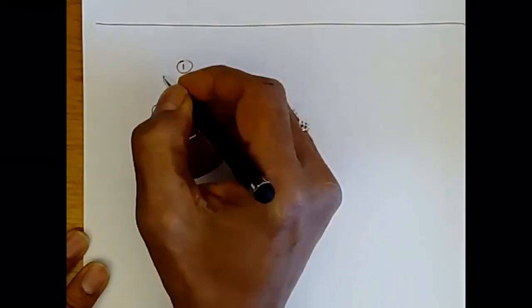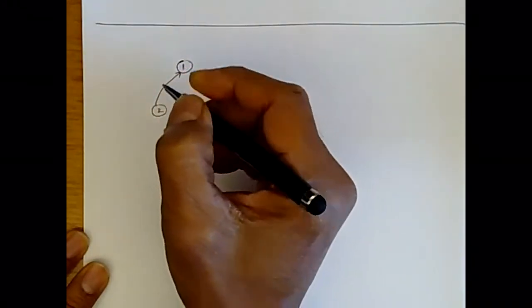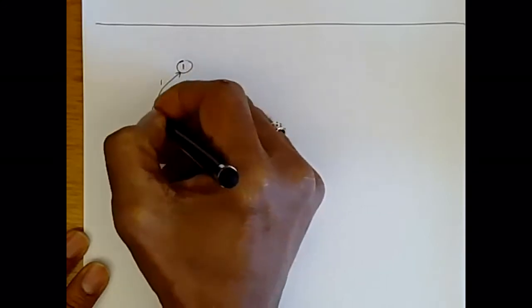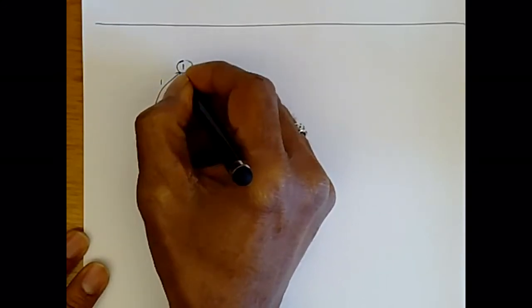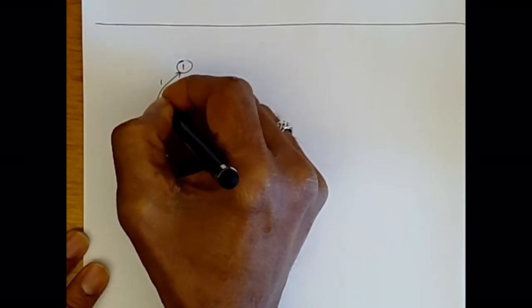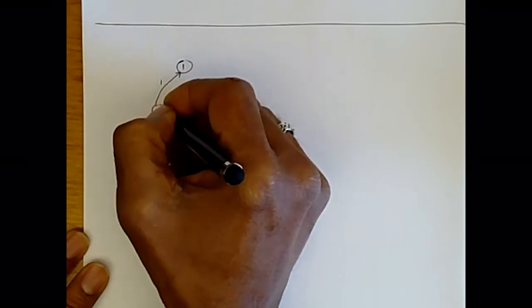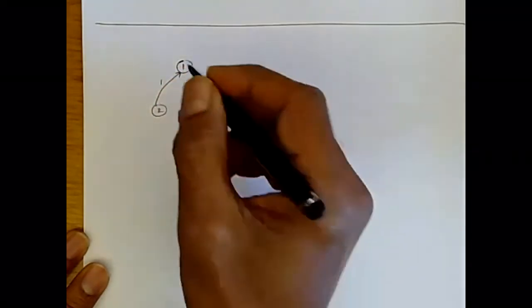And as we discussed earlier, we have certain ways of going from one state to the other. This arc from state two to state one is annotated with the probability of going to state one if you're at state two. This is called the transition probability for obvious reasons.